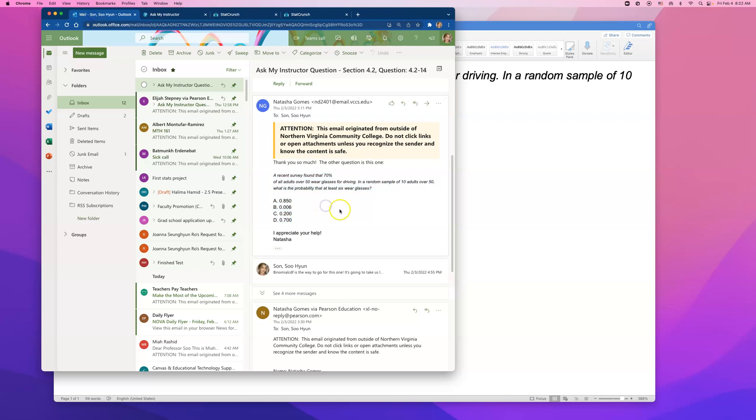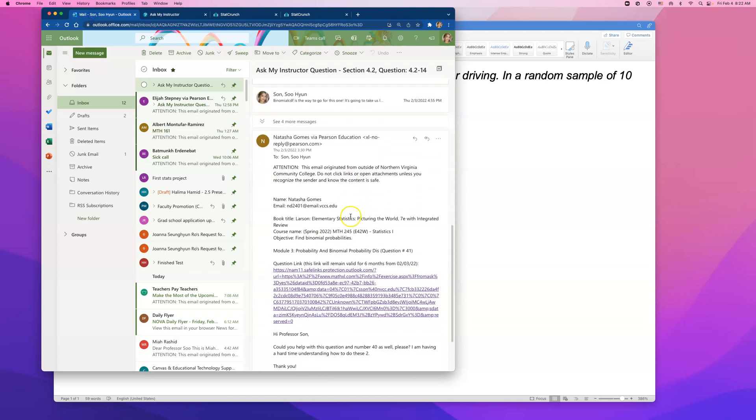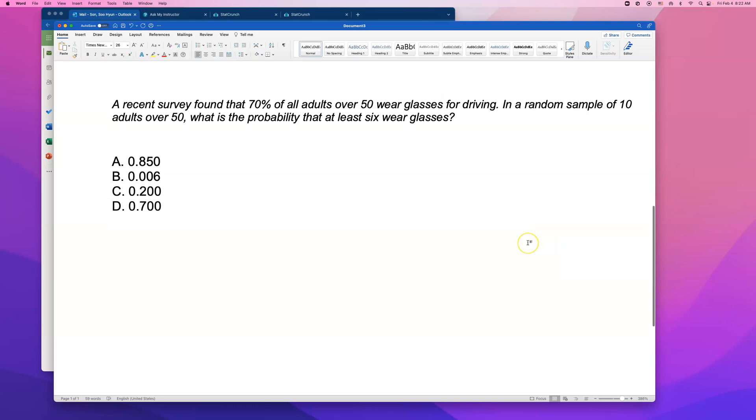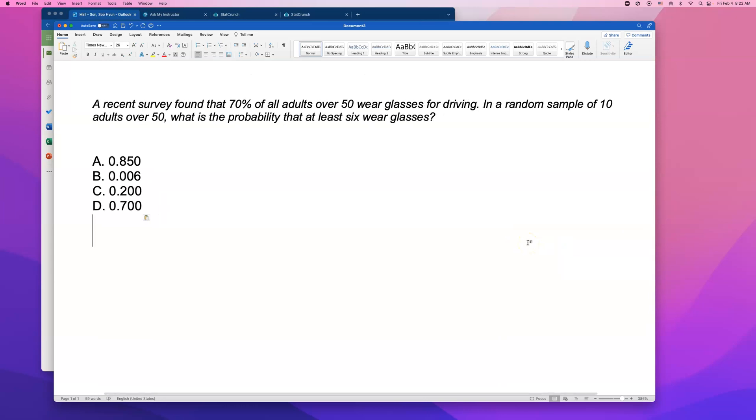Okay, I think this one is number 40 or 41 on module 3. A recent survey found that 70% of all adults over 50 wear glasses for driving. In a random sample of 10 adults over 50, what is the probability that at least 6 wear glasses? This is very similar to that first one that we just went over.